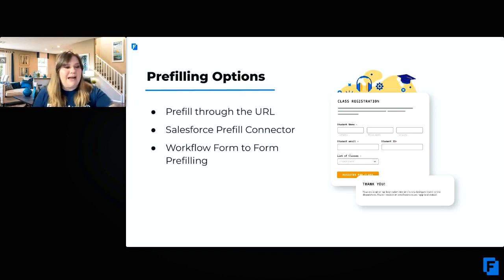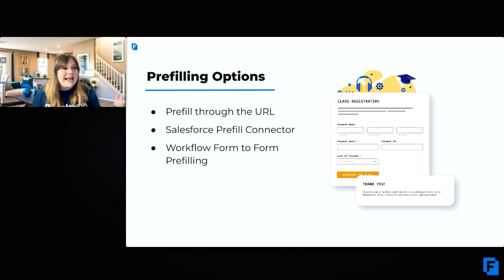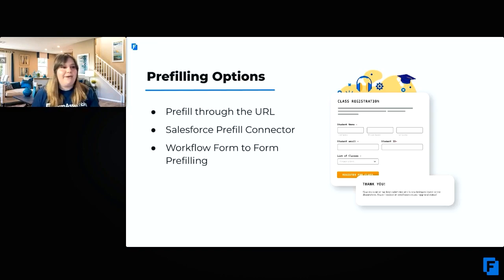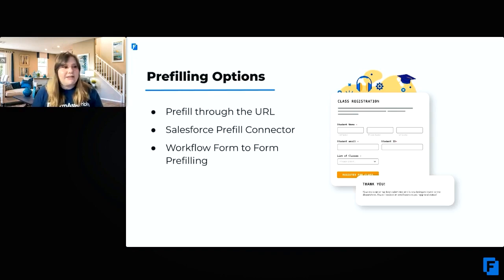Workflow Form-to-Form Pre-Filling allows you to map the data filled out in one form and map it later in your respondent's forms, wherever you need that data pre-filled. All of these options allow you to have information you already have from your respondents filled right into the form, easing their completion of your form and making their lives easier — and yours too, because you can ensure you're getting accurate data.